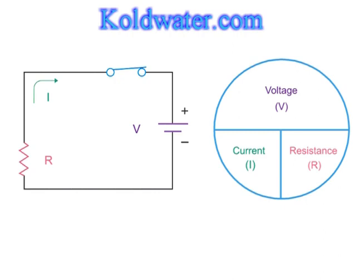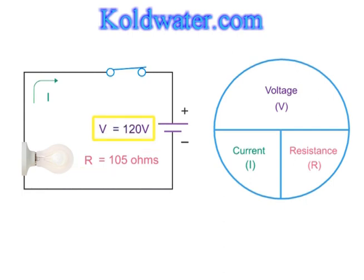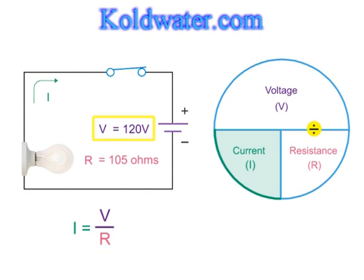Let's look at a few circuit examples and use the various formulas to calculate the values of each of the circuit components. For the following circuit, if a light bulb in a lamp has a resistance of 105 ohms, and the voltage to light the lamp requires 120 volts, how much current flows through the light bulb? Using the Ohm's law circle and solving for current, you would divide the voltage by the resistance. So, 120 volts divided by 105 ohms is 1.142 amps.